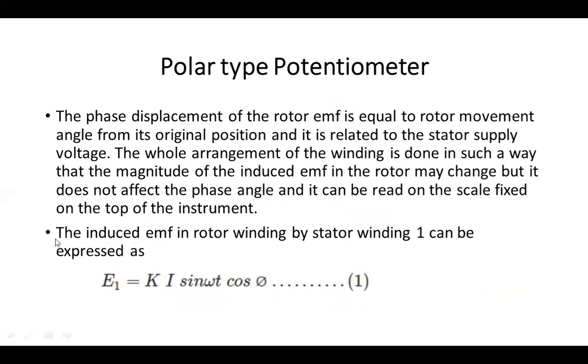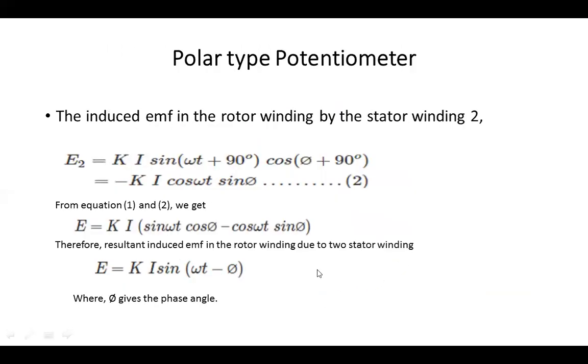Now we are coming that the induced EMF in the rotor winding by stator winding 1 can be expressed as E1 equals to K into I sin omega t into cos theta. You can mark this equation as equation number 1. The induced EMF in the rotor winding by the stator winding 2 we can express as E2 equals to K into I sin of omega t plus 90 degree cos of phi plus 90 degree. So, what we can write it? Minus K into I cos omega t sin of phi, right?